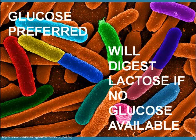Sometimes bacteria will find itself in an environment where glucose is absent, but it still has the genetic machinery to process lactose. It's easier to process glucose, but if glucose isn't present, it's time to turn on the production of the enzymes to start digesting lactose. And that's what the lac operon is for.